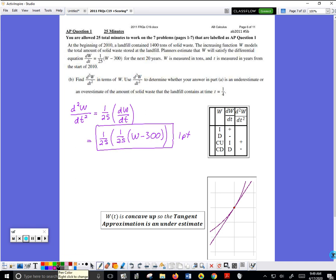So W is the curve. Here's my second derivative. If the second derivative is positive, then W will be concave up.